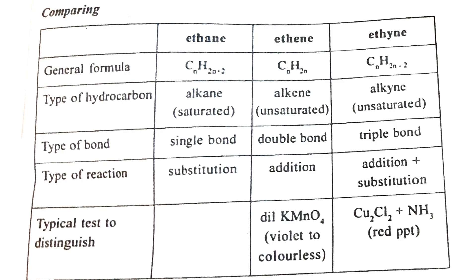The general formula for alkanes is CnH2n+2. For alkenes it is CnH2n. For alkynes it is CnH2n−2. The reactions involved include addition and substitution reactions.